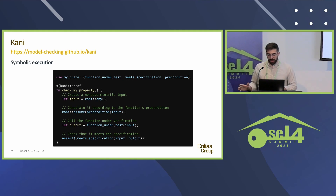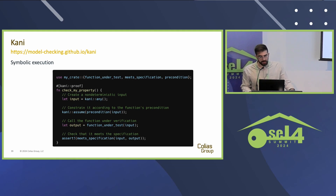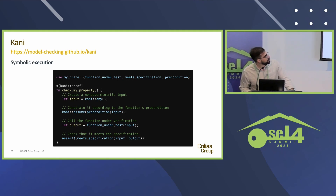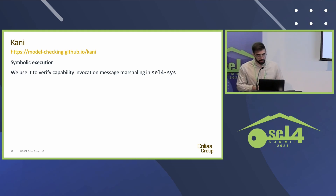On the verification side, at last year's summit Mikal from Galwa talked about Kani. Kani is a verification tool for Rust from AWS. This snippet from the Kani docs shows what symbolic execution looks like — a variable input is symbolic, and Kani uses model checking to verify that an assertion would be true for all possible values of input. This tool is nice, under active development, and pretty easy to use. Right now we use it to verify certain aspects of capability invocation, message marshalling and unmarshalling in the seL4-sys crate, and we plan to use it for more in the future.